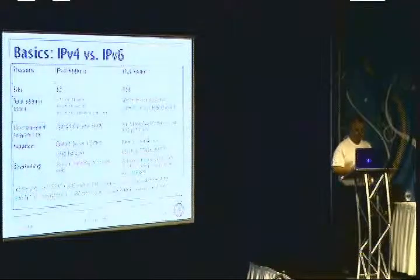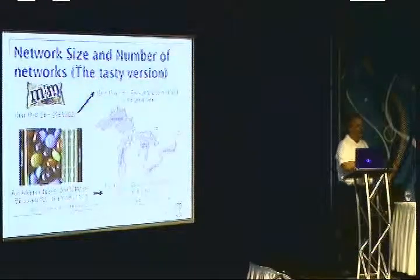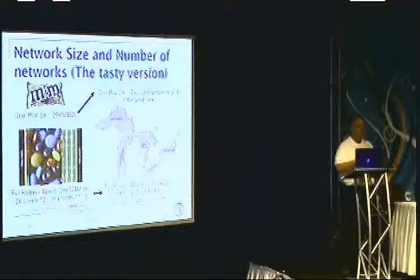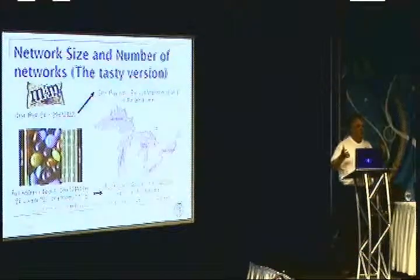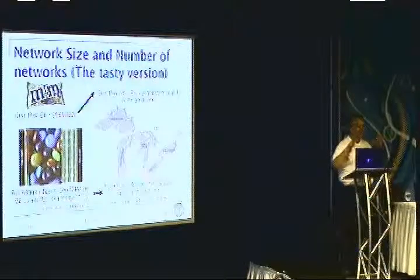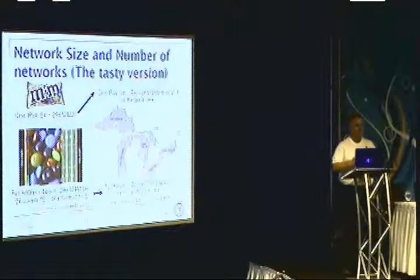I like to help people visualize really large numbers because in my experience people can visualize directly up to maybe 100, but after that numbers just become big, bigger, biggest — the scale gets lost. So to help visualize the scale of IPv6: a large PEZ dispenser holds about 254 almond M&Ms. Yes, I did actually count a few of them — it's research.